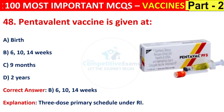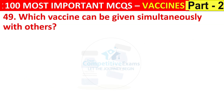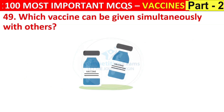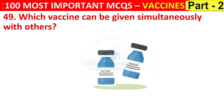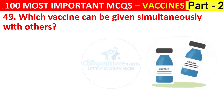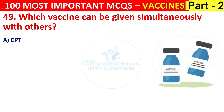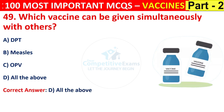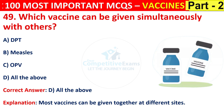Question number 49. Which vaccine can be given simultaneously with others? Options are DPT, measles, OPV, or all of the above. The right answer is D, that is all of the above. Most vaccines can be given together at different sites.